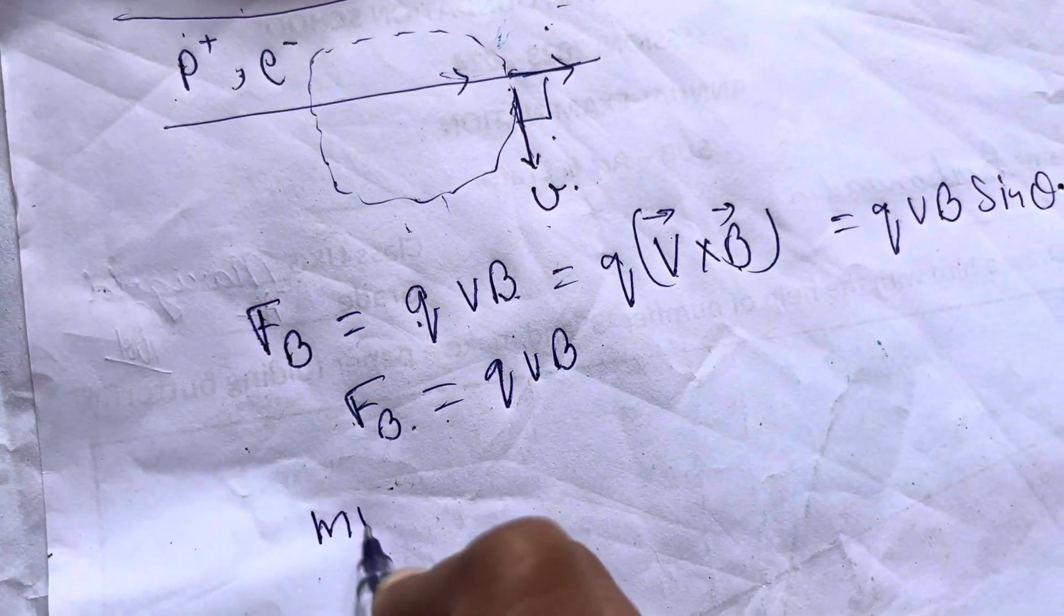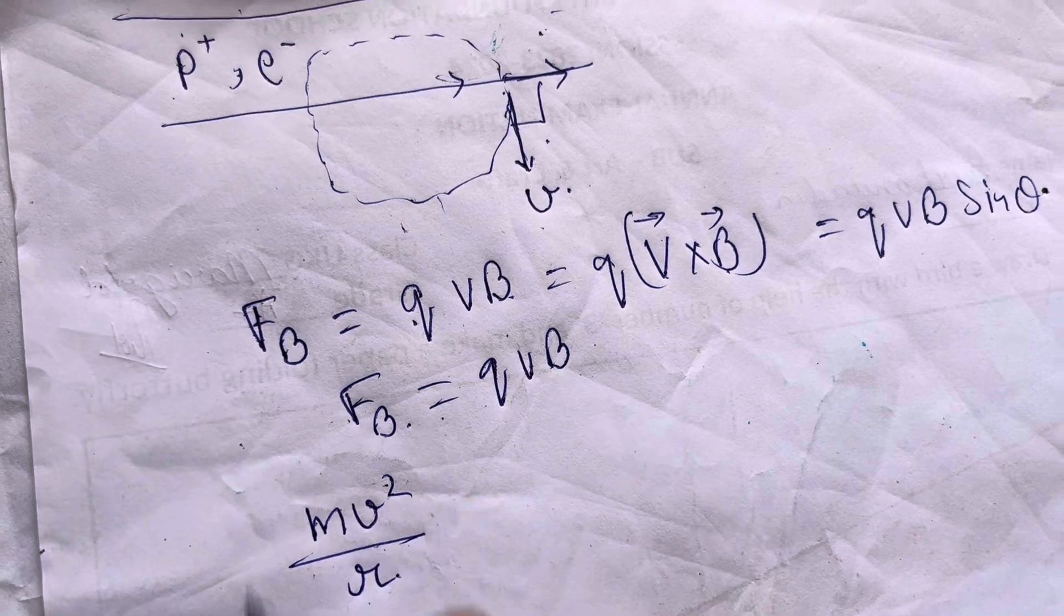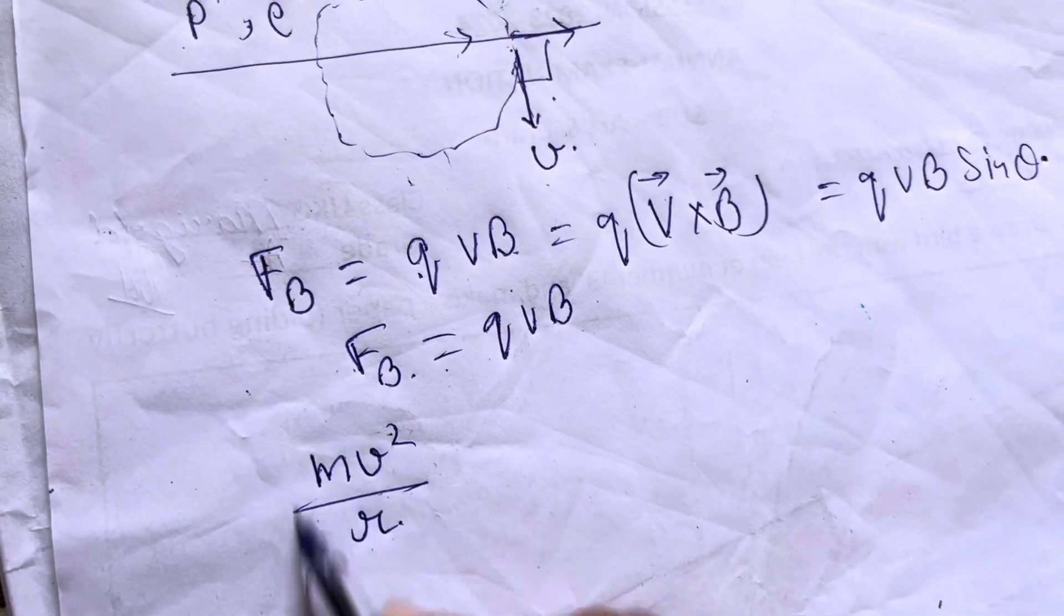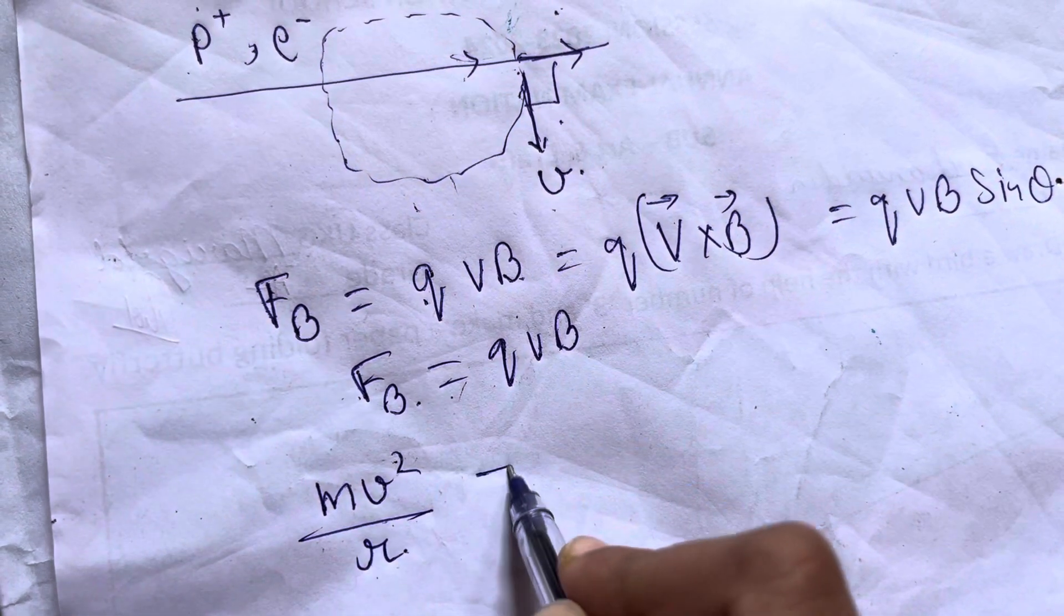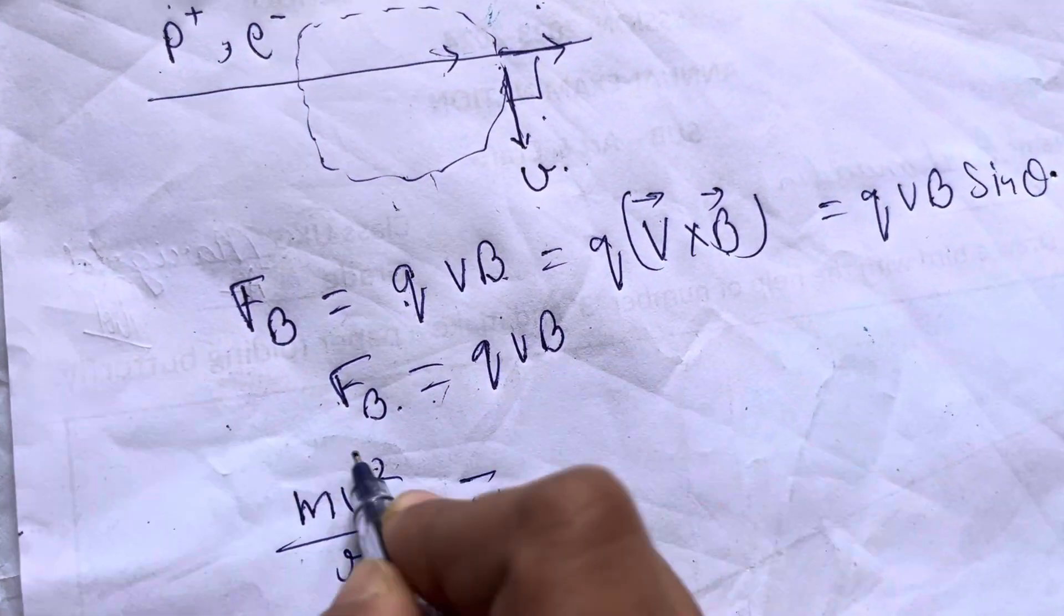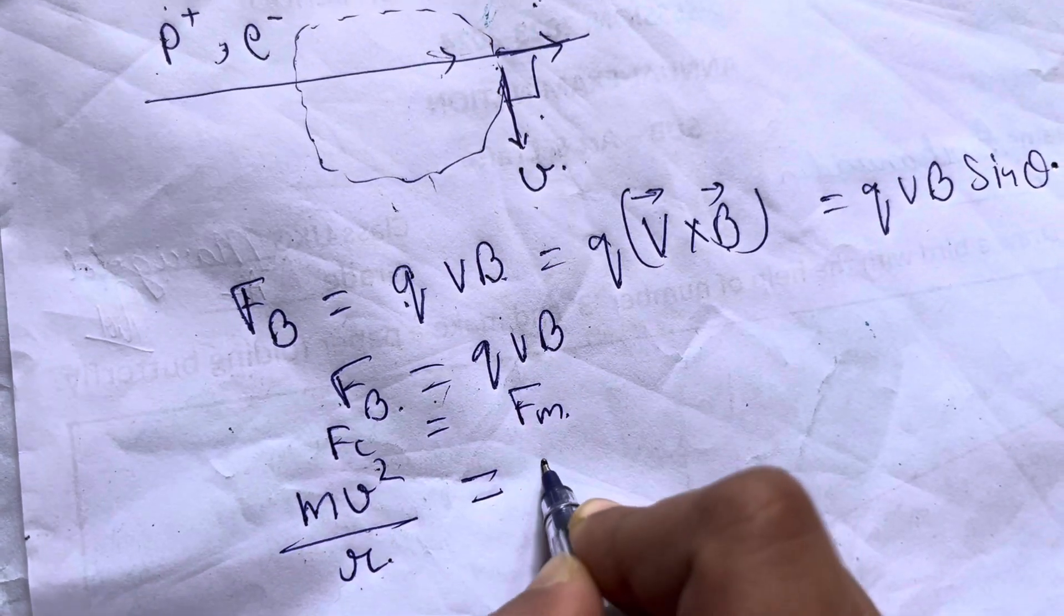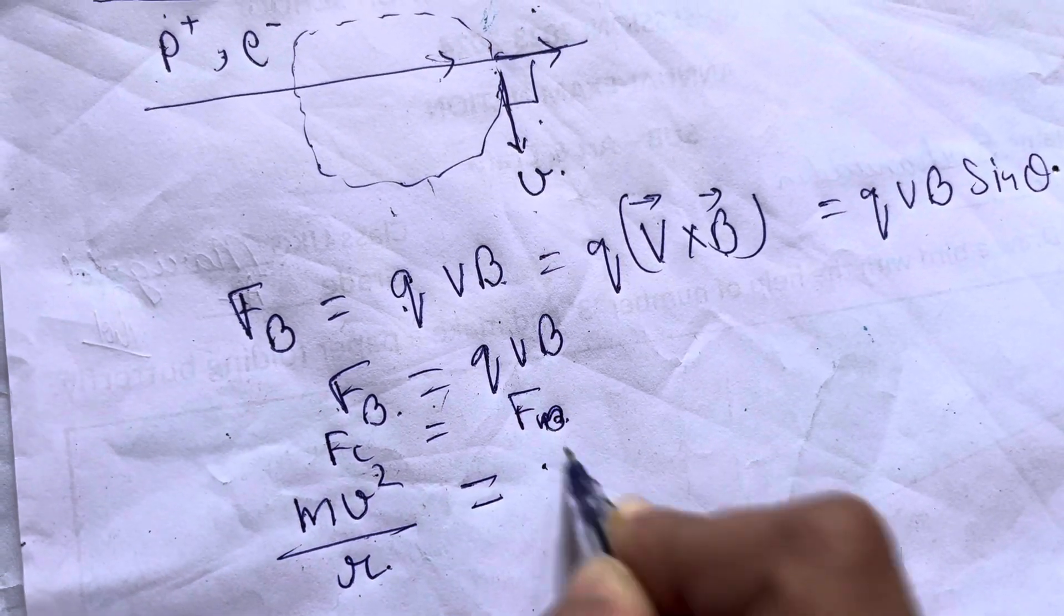Now we are saying it takes a circular path. If it takes a circular path, then the force is M V squared by R. This is the circular formula. Centripetal force is here. The formula is M V squared by R, which is equal to magnetic force.